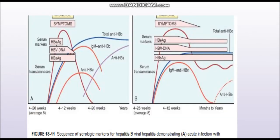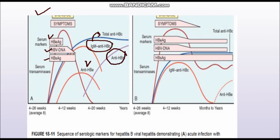Going again to the diagram for acute infection: the first antigen to rise is HBsAg, then HBV DNA and HBeAg. The first antibody to rise is the IgM variant of anti-HBc, followed by the IgG variant. When the disease enters the chronic phase, the IgG variant predominates. The second antibody to rise is anti-HBe, which does not have much of a role. Finally, anti-HBs rises, indicating the disease has been resolved.